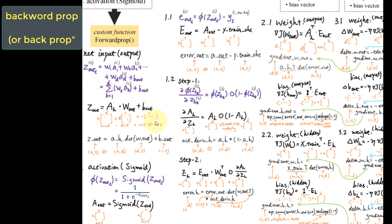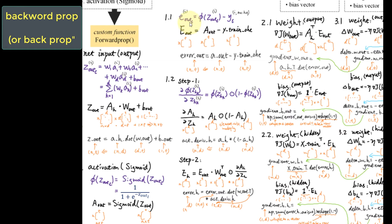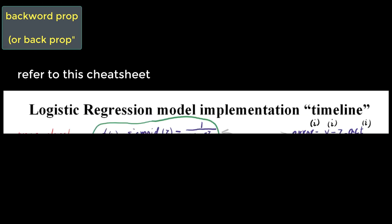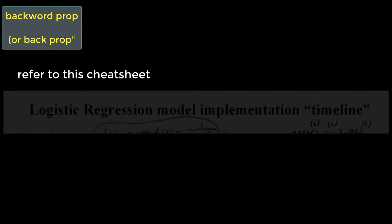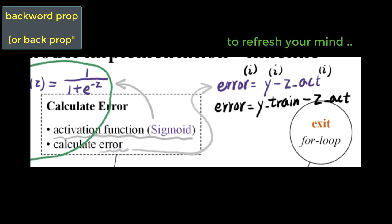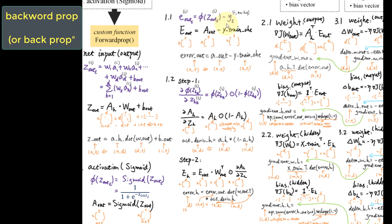Here are the steps involved in the first component. The first step is the error propagation of the output layer. Taking the perspective of a training example and one unit L of the output layer, the error is simply the activated value of that unit in the output layer subtracted by the y value in one-hot encoded format. If you remember in logistic regression as well as the Adaline model, the error is calculated with the y value first subtracted by the activated value. This time we are reversing the order so that we can eliminate the minus term in the gradient function. This is a trick we are using.